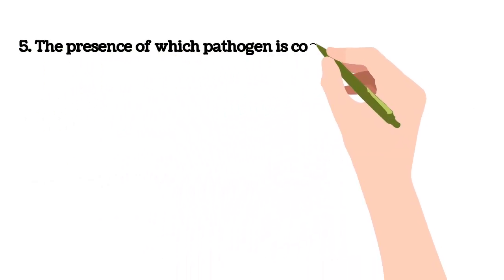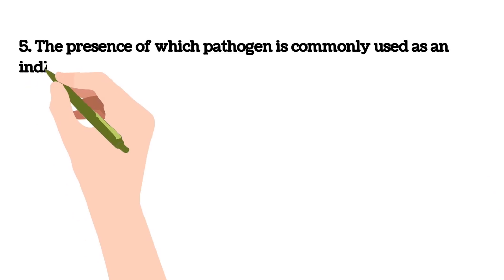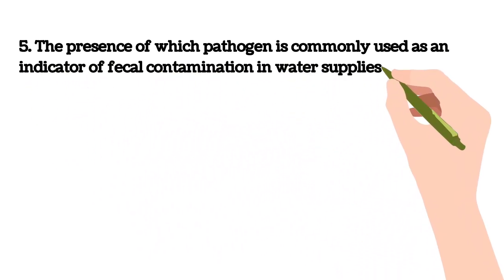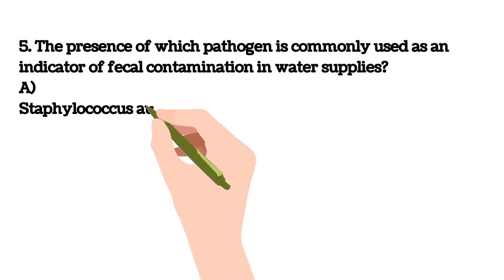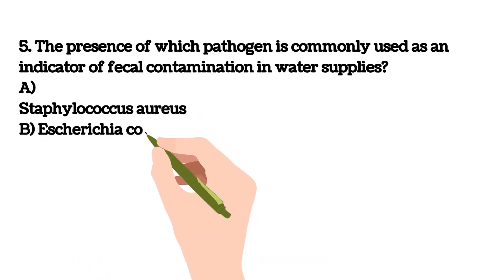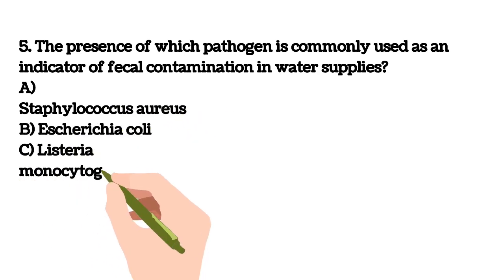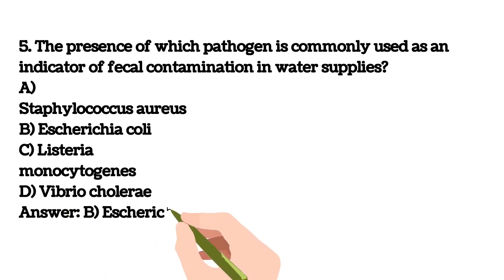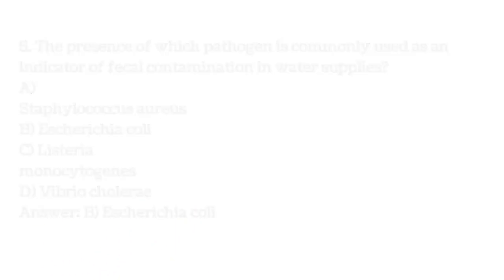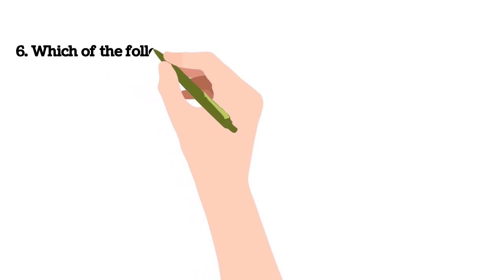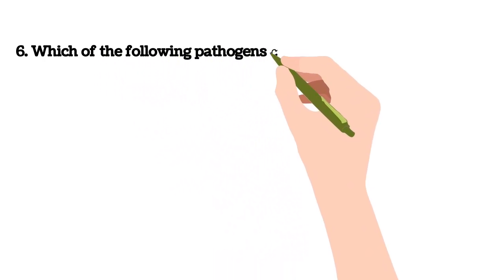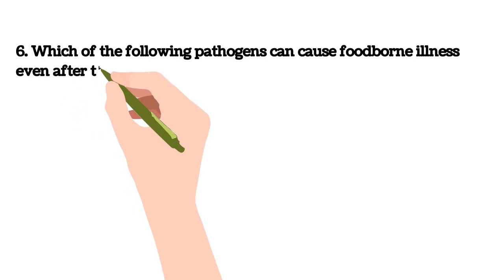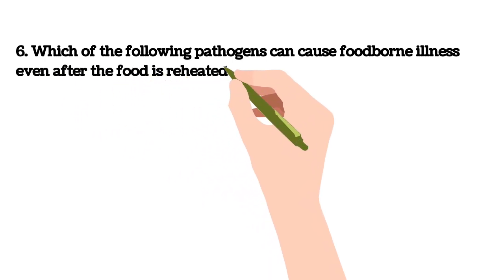Fifth question: the presence of which pathogen is commonly used as an indicator of fecal contamination in water supplies? A) Staphylococcus aureus, B) E. coli, C) Listeria monocytogenes, D) Vibrio cholerae. The answer given is Bacillus cereus.